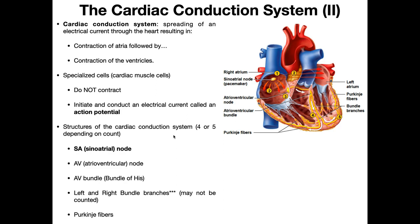For an undergraduate anatomy class, these are generally the five regions of the conductive system you're going to hear about. First is the SA node, or sinoatrial node, located in the wall of the right atrium. Then we have the AV node, or atrioventricular node, named because it's on the border between the atria and the ventricles. Then we have the AV bundle, sometimes called the bundle of His, and then there are left and right bundle branches — the left branch goes to the left ventricle and the right branch goes to the right ventricle — and then along Purkinje fibers. It occurs in this order.